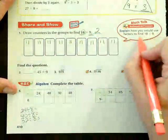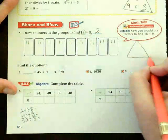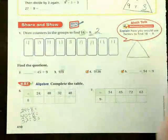Explain how you would use factors to find 18 divided by 9. Well, if you wanted to do 18 divided by 9, you need to know the factors of 9.